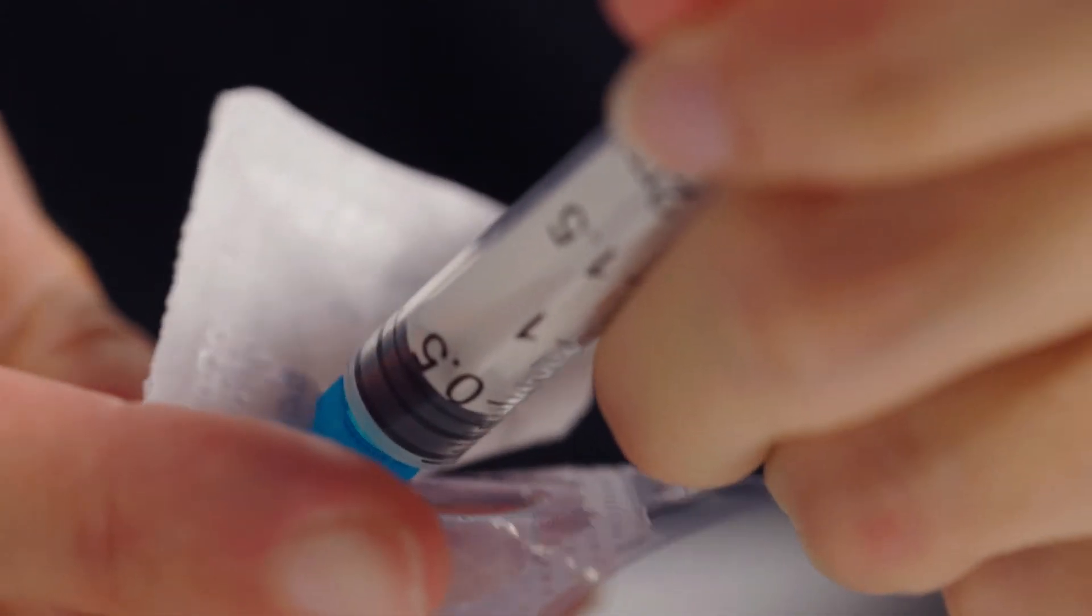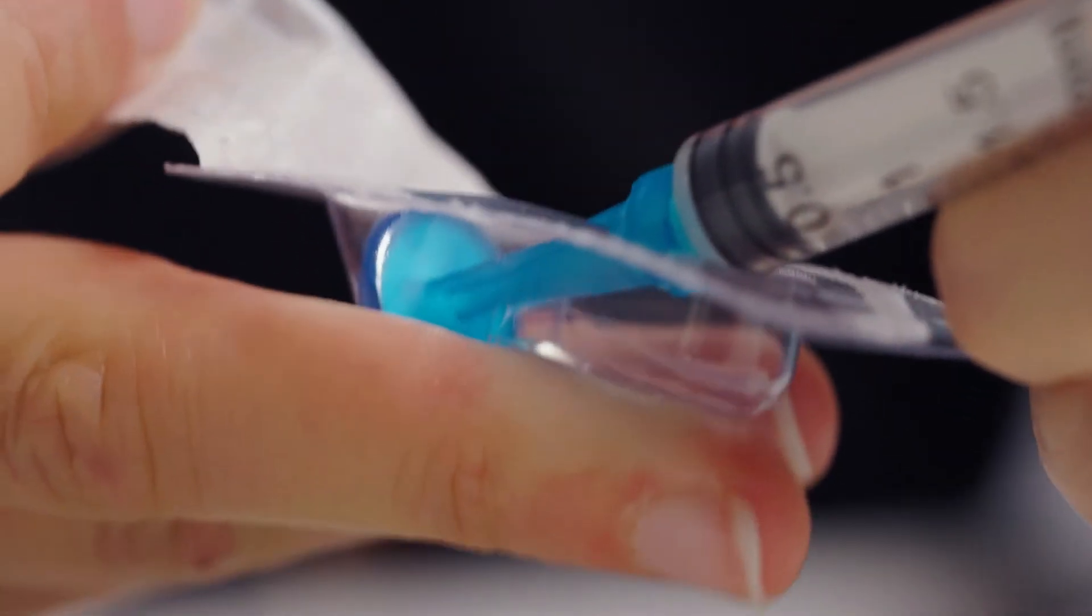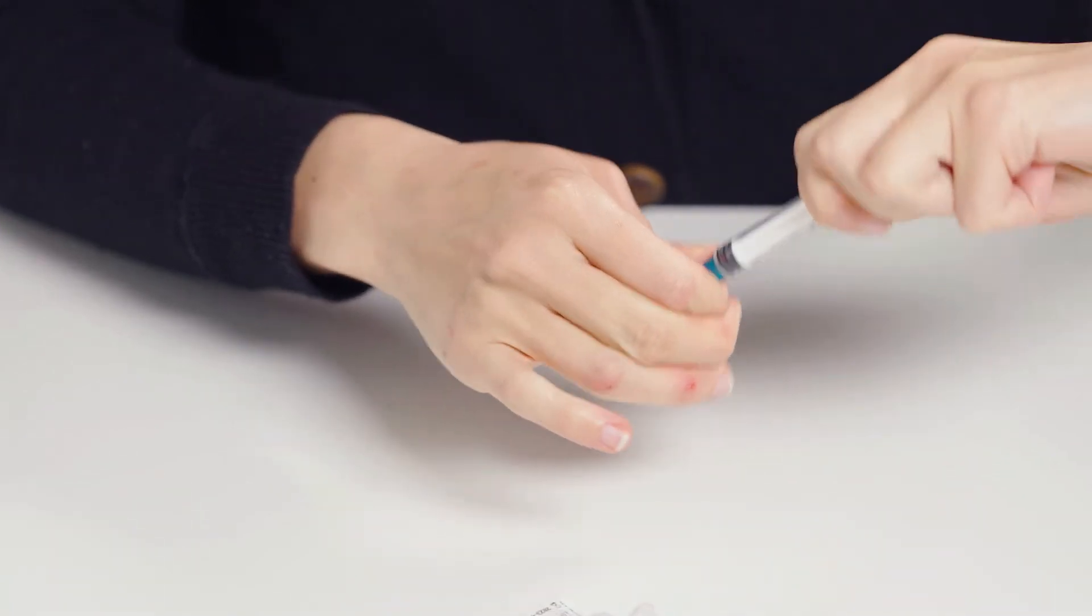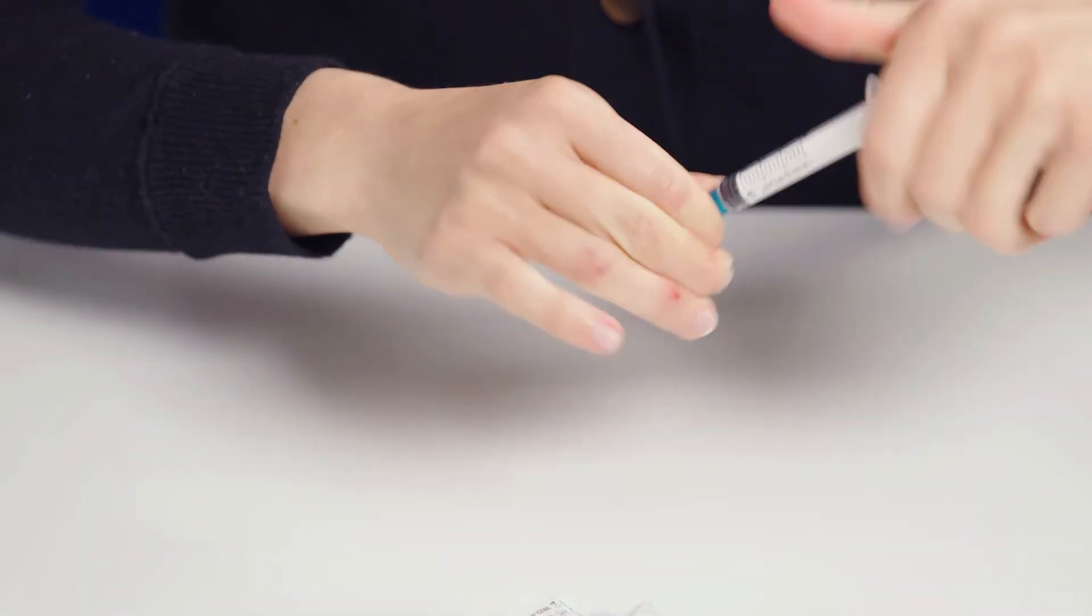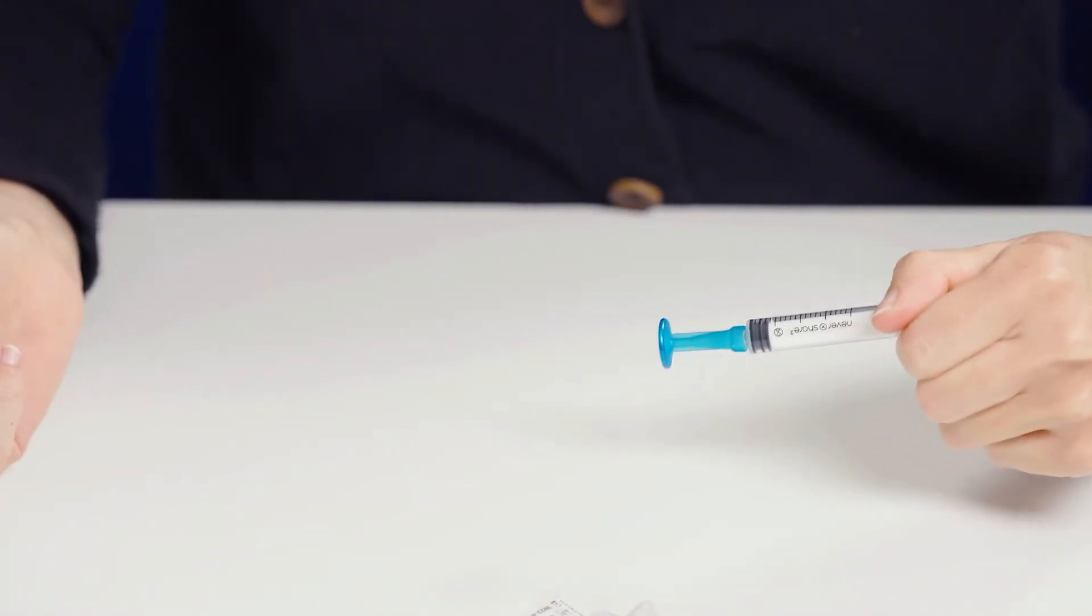Next, insert the syringe into the filter. To ensure a good seal between filter and syringe, twist the syringe within the filter one full rotation. The filter is now correctly positioned.